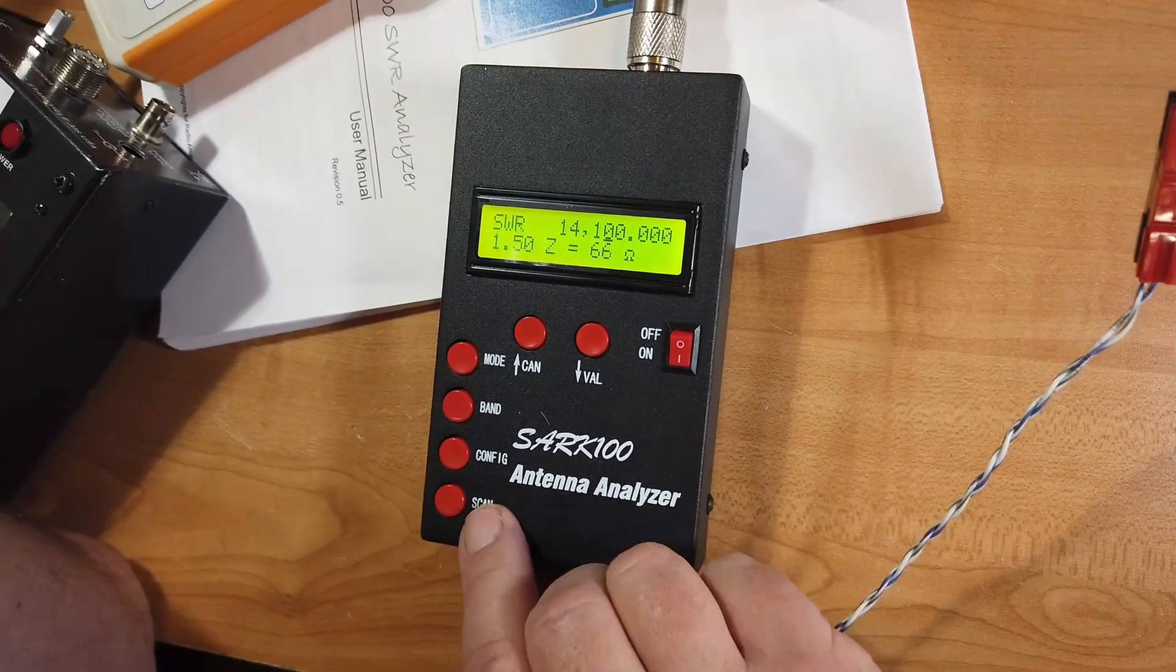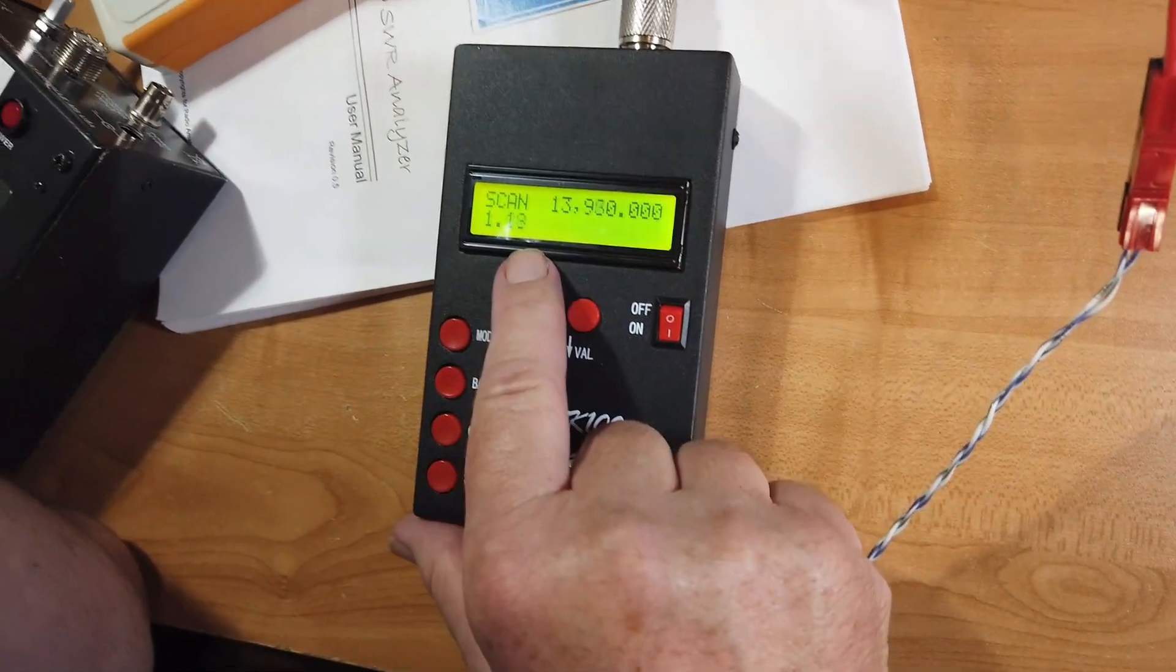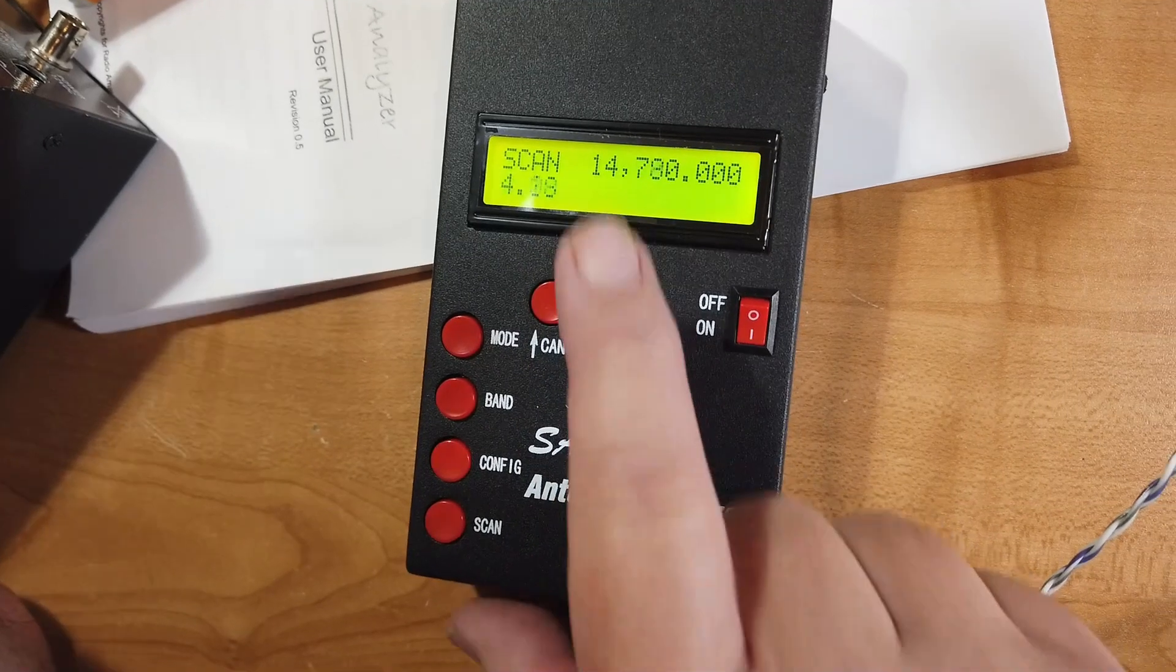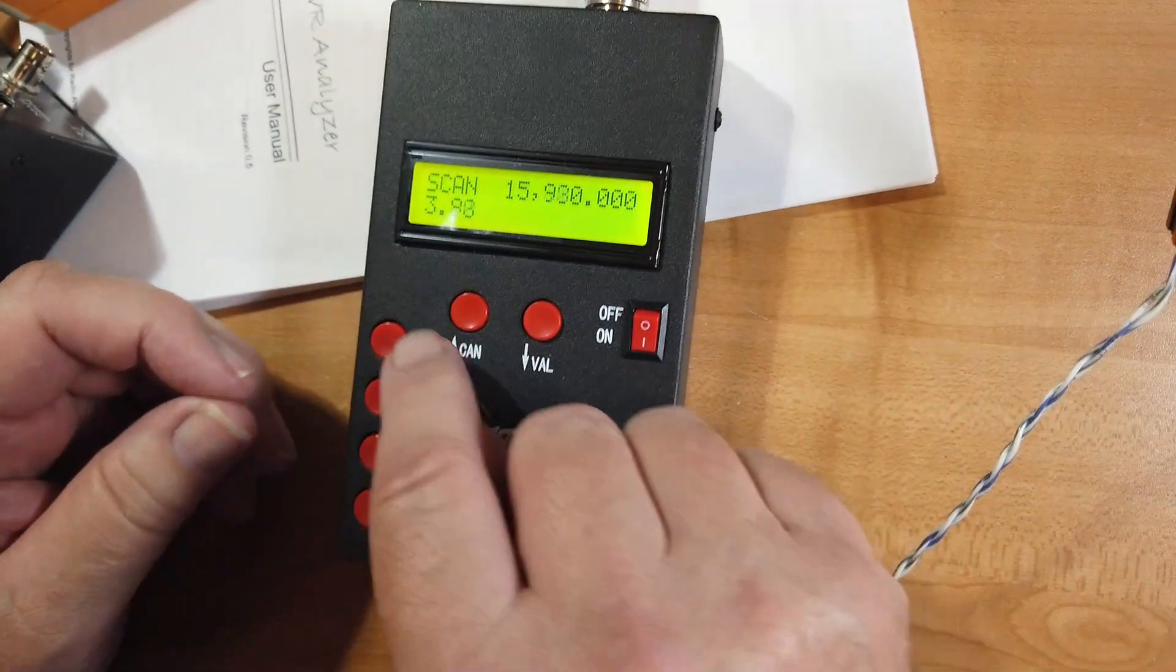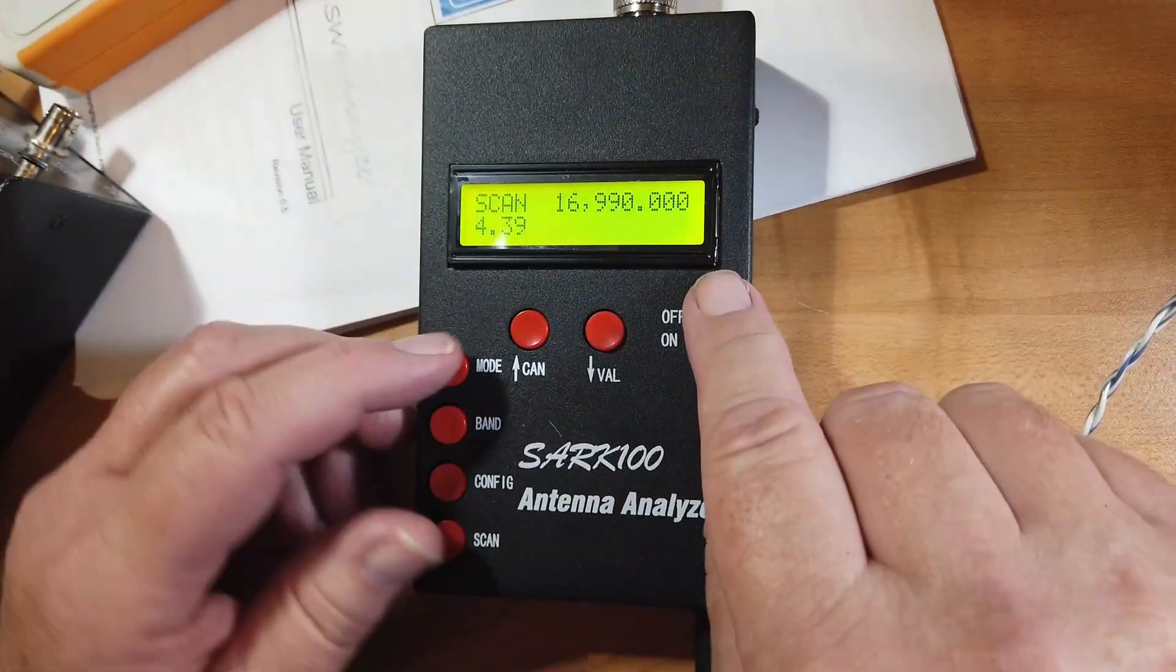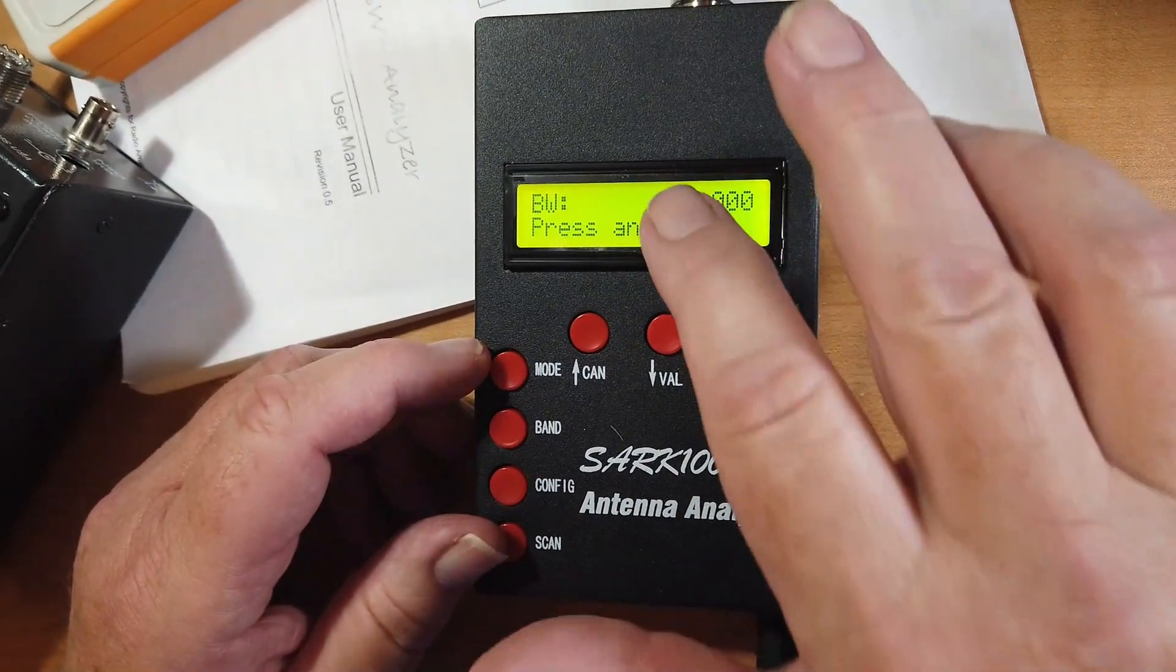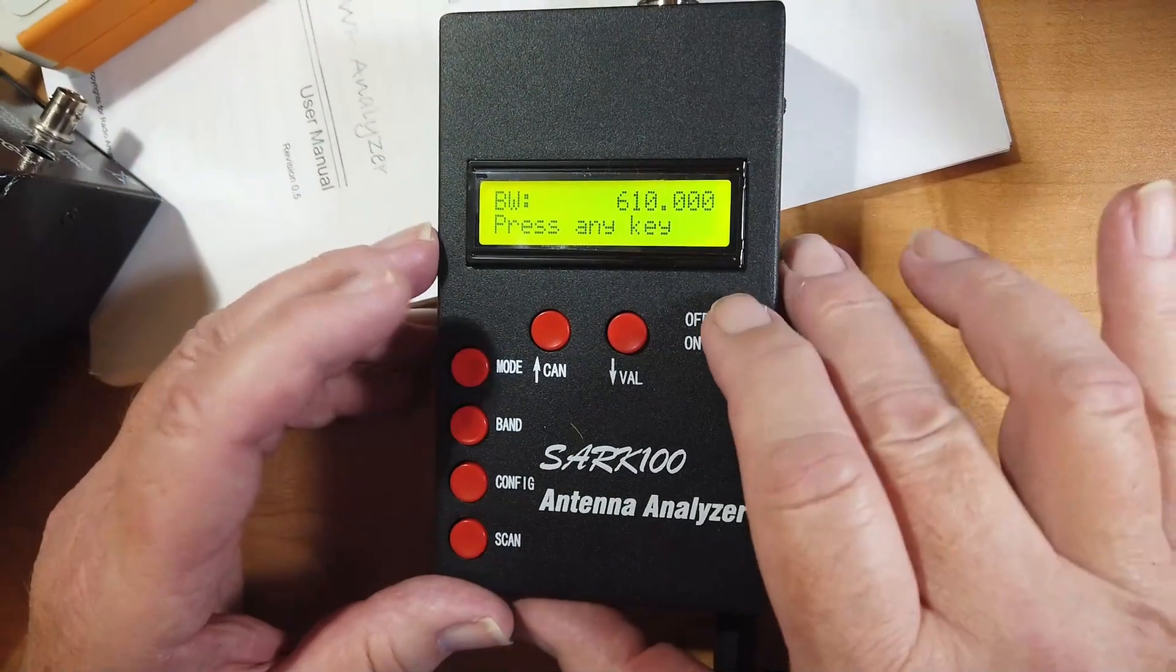Now, you can set it up to scan like a band. And this will tell you where the lowest things are. And we see that as we get across 14, what the bandwidth is. Let's stop the scan. Bandwidth 610. This is the 3 to 1 bandwidth on the thing, or it might be 2 to 1 bandwidth.